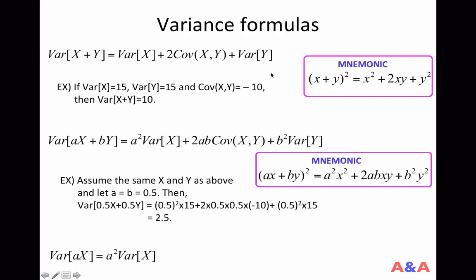So this variance formula is very easy to remember. Let's look at a numerical example. Suppose both x and y have variance 15, and suppose also that the covariance is minus 10. Then what is the variance of x plus y? According to this formula, it's 15 plus 2 times minus 10 plus 15, which equals 10.